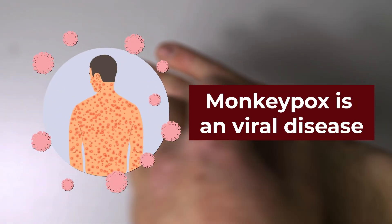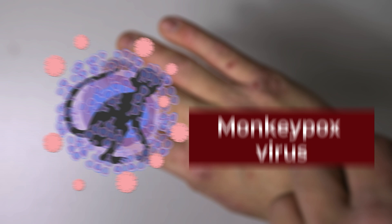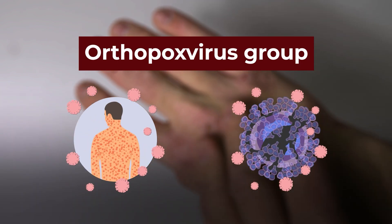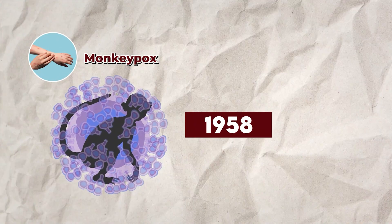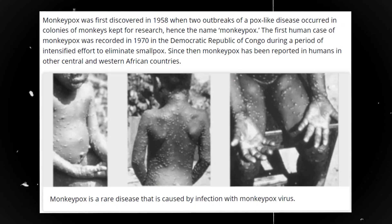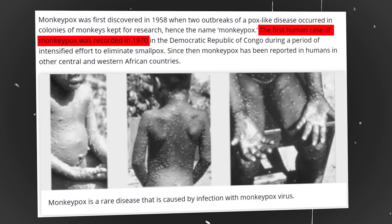Monkeypox is a viral disease caused by the monkeypox virus, which is part of the orthopox virus group. Smallpox is also caused by the same virus group. The first case of monkeypox was reported in 1958 in monkeys, and in humans it was first reported in 1970.